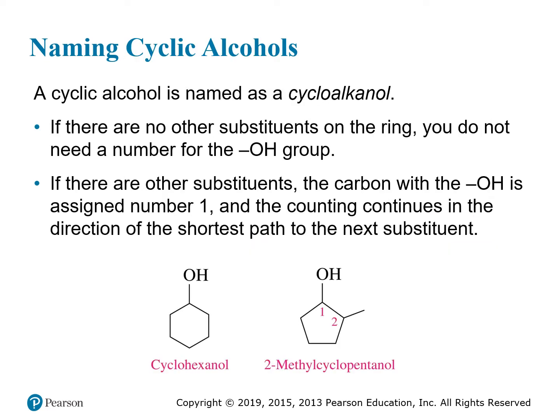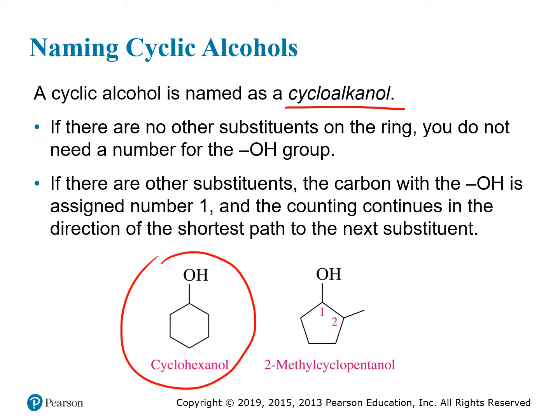We can also have a hydroxyl group on a cyclic alkane, giving a cyclic alcohol named analogously by adding 'cyclo' to the front. Be careful not to confuse cyclohexane with phenol — without the double bonds or the ring in the middle, this is just cyclohexane with all single bonds, an alkane. So this is cyclohexanol, whereas adding the circle would make it phenol. With only one OH group and no other substituents, no number is needed — all positions are the same.